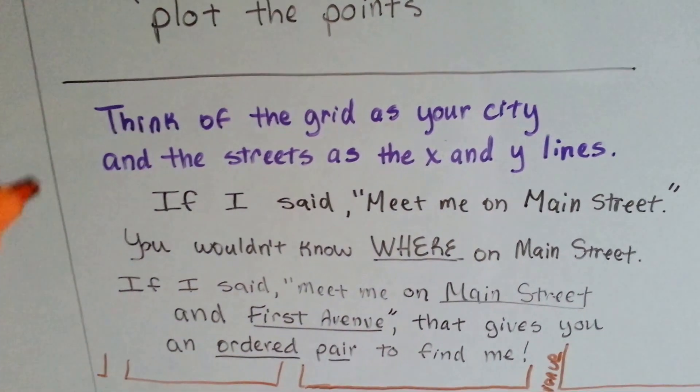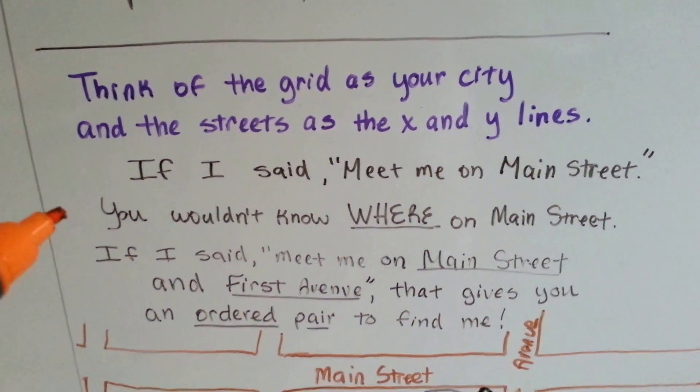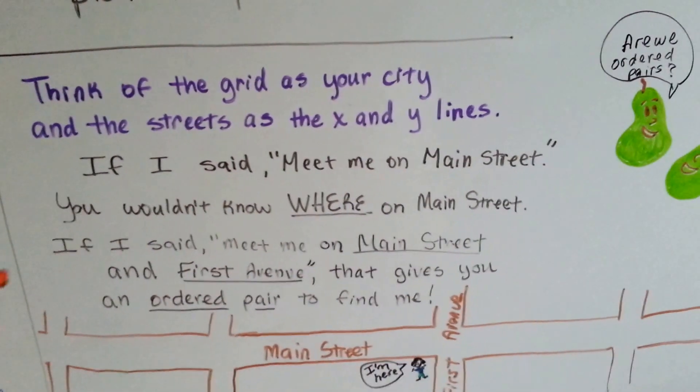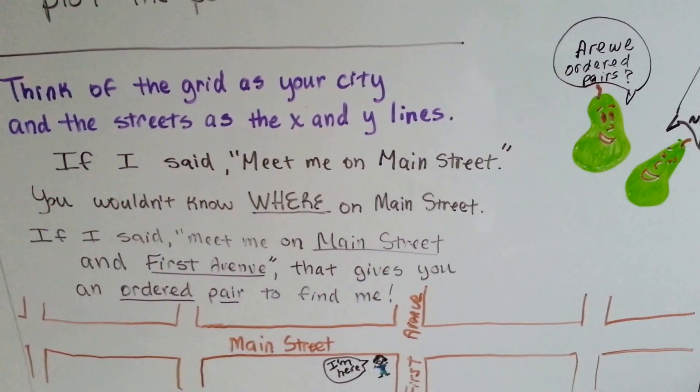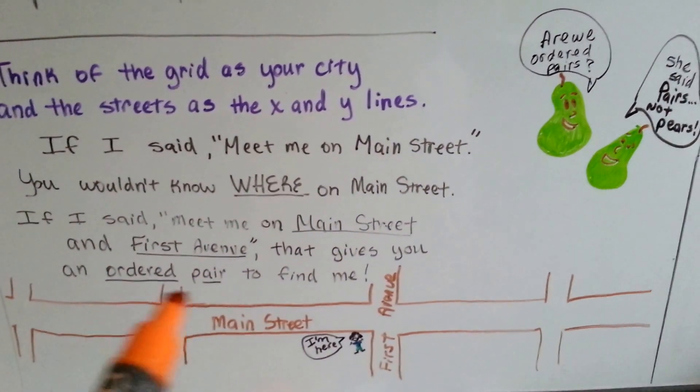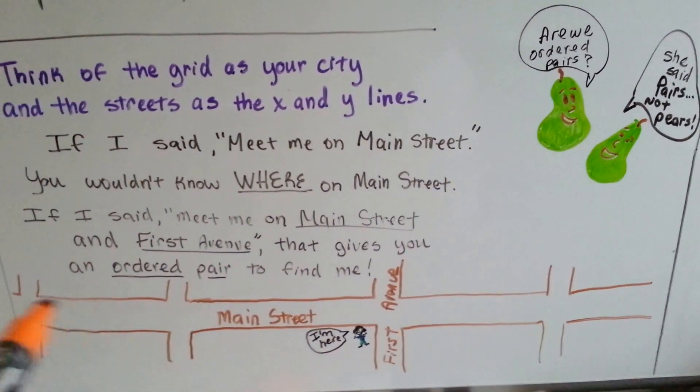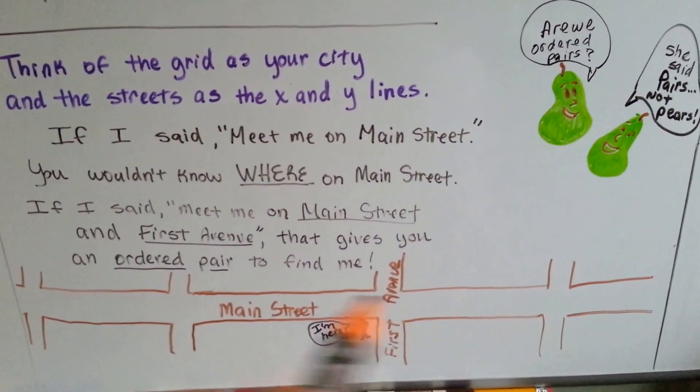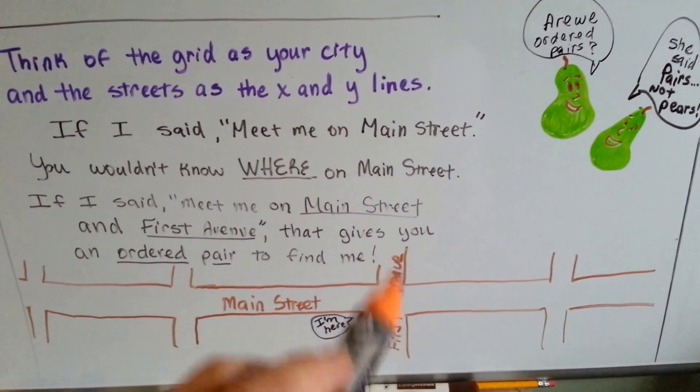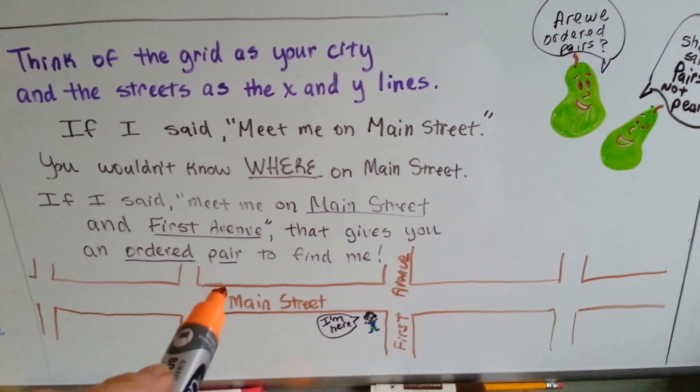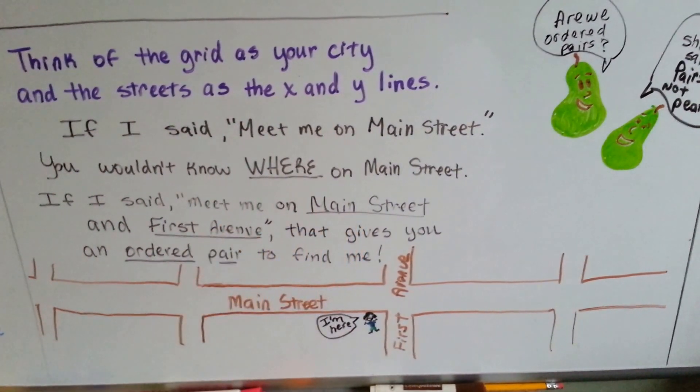Think of the grid as your city and the streets as the x and y lines. If I said meet me on Main Street, you wouldn't know where on Main Street because it could be a really long street. But if I said meet me on Main Street and First Avenue, here's Main Street, I could have been anywhere there. But with Main Street and First Avenue, here's First Avenue, then you know I'm right here at this corner because I gave you an ordered pair.